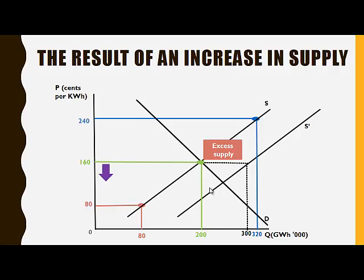This will put downward pressure on the price level. The price decreases to the new equilibrium level of 120 cents per kilowatt hour, and at this new equilibrium price, a new equilibrium quantity of 260 will be established.